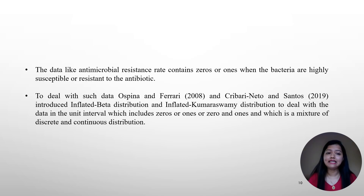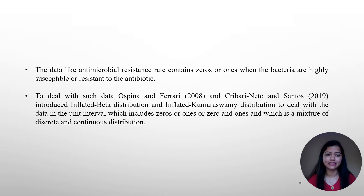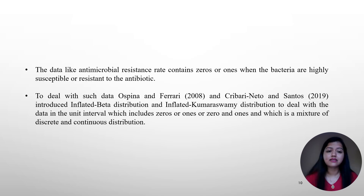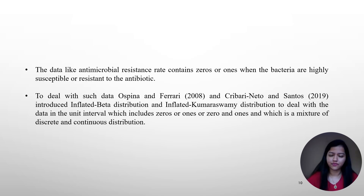For data like antimicrobial resistance rate when it contains zeros or ones — that is when bacteria is highly susceptible or resistant — Ospina and Ferrari in 2008 and Cribari-Neto and Santos in 2019 introduced inflated beta distribution and inflated Kumaraswamy distribution. These deal with data where resistance rate includes zeros or ones, which is a mixture of discrete and continuous distribution — that is, degenerate and beta distribution for inflated beta, and degenerate and Kumaraswamy distribution for inflated Kumaraswamy.